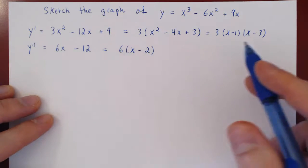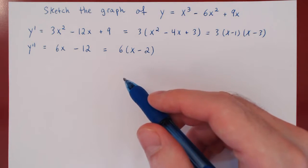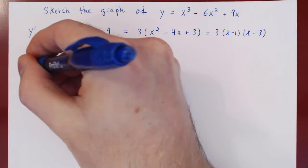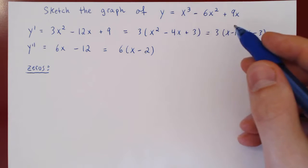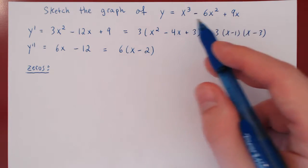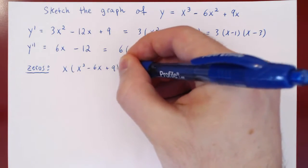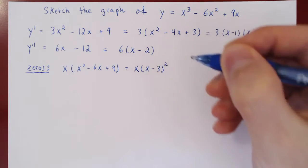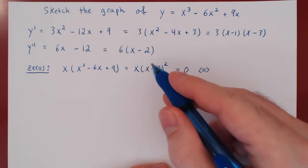Now that we have the first and second derivative fully factored, we're good to go. The first thing we may look at when sketching the graph are the x-intercepts and y-intercepts. The x-intercepts are the zeros of the function. Only find the zeros if they're fairly easy to find. There's a common factor of x, so if we factor x, we're left with x squared minus 6x plus 9. This quadratic is a perfect square: x minus 3 times x minus 3, or x minus 3 squared. So the function equals 0 when x equals 0 or x equals 3.